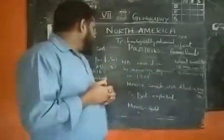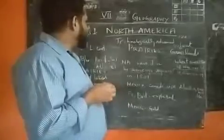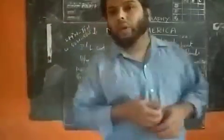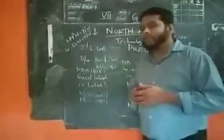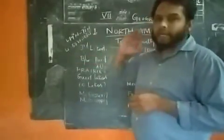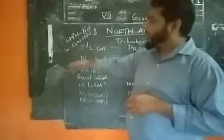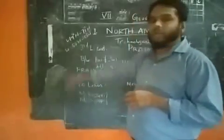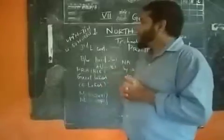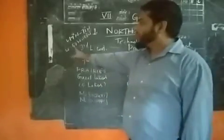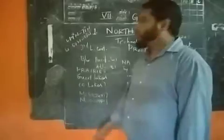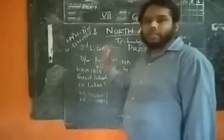Now let us see the location and extent of North America. In terms of latitude, it extends from 90 degrees north to 71 degrees north. The longitude extends from 50 degrees west to 150 degrees west. It is the third largest continent in the world.